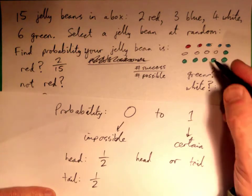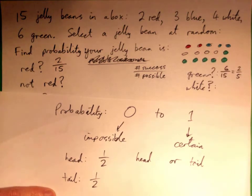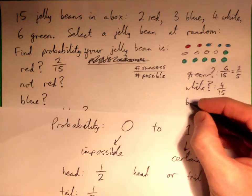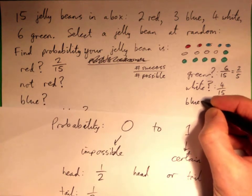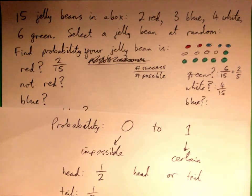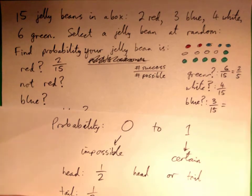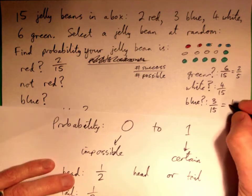What's probability of getting a white jelly bean? Right, does that make sense? Probability of getting a blue jelly bean? Three out of 15. Now simplify that. Correct.